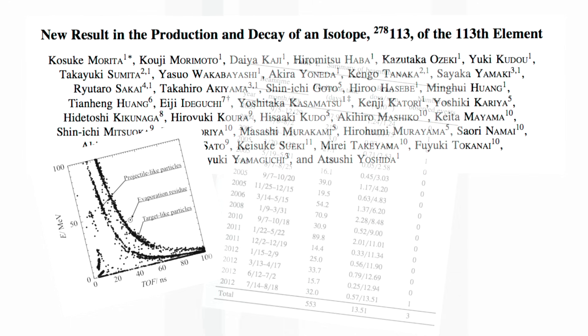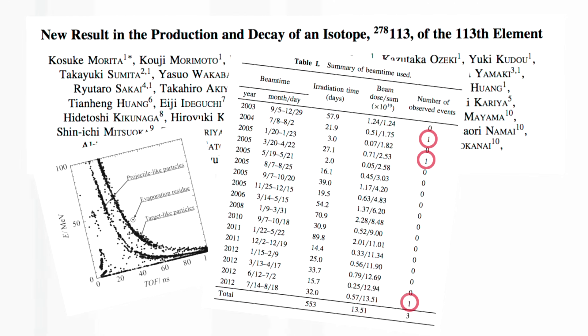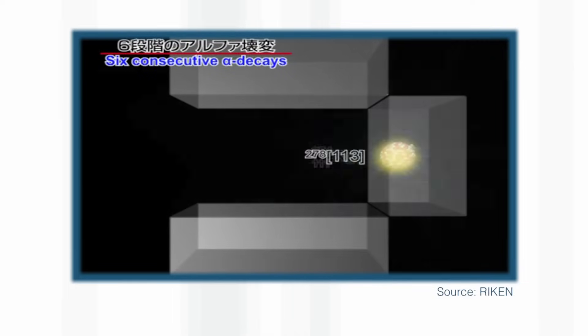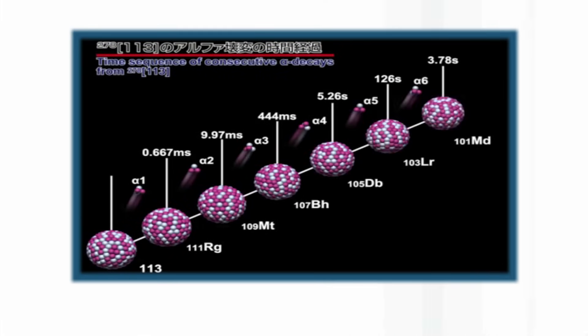This is not something that you do quickly on a Friday afternoon and publish the next day. A huge amount of verification is needed. The way that you detect these elements is that once they're formed, they shoot out of the back of the bismuth target onto a detector and then decay radioactively into a chain of different elements. This chain tells you which element you formed.